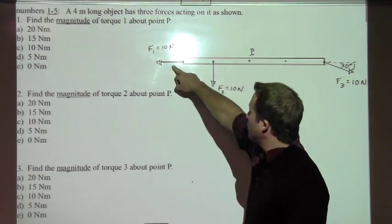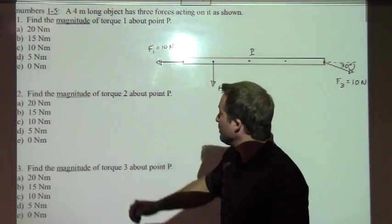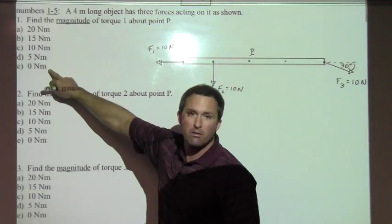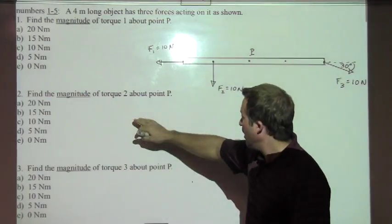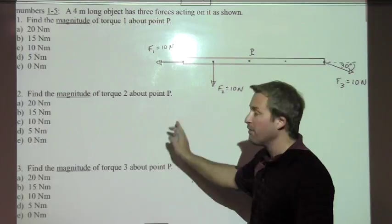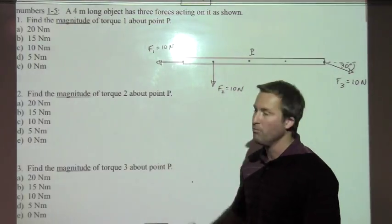So in number one, the torque created by force one, that was zero Newton meters, because the lever arm was zero, and both torques two and three were both ten Newton meters.